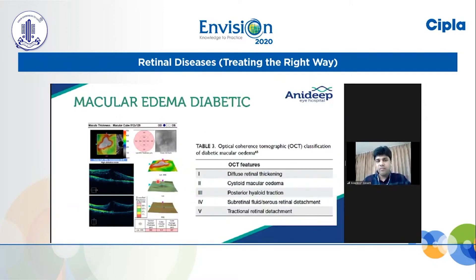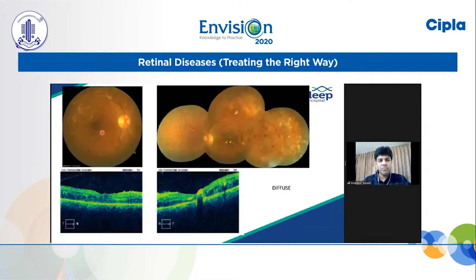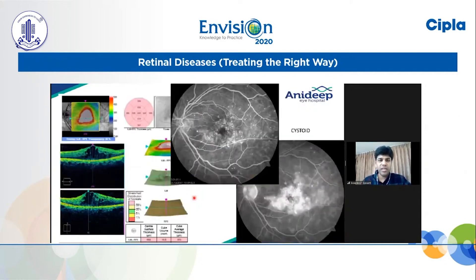Diabetic retinopathy — OCT is a very important tool to plan treatment. This is the OCT-based classification of DME: diffuse retinal thickening, CME-related diabetic macular edema, posterior hyaloid traction, subretinal fluid, and tractional retinal detachment. A typical case shows diffuse retinal edema; where there is center-involving CME, we can also show the patient that the hard exudate clump is lying right in the center of the fovea, so the visual prognosis is not very great. This is cystoid type of DME where the angiographic picture shows petaloid leakage and the OCT supports the same.